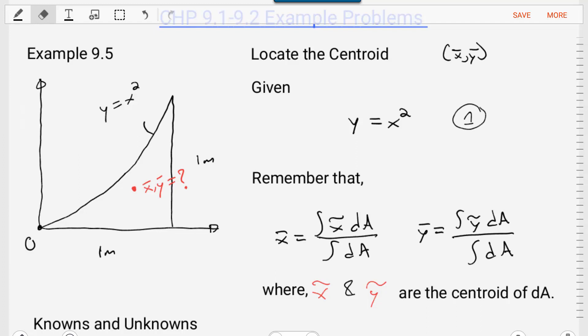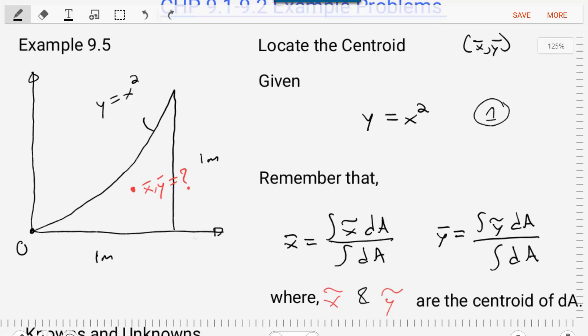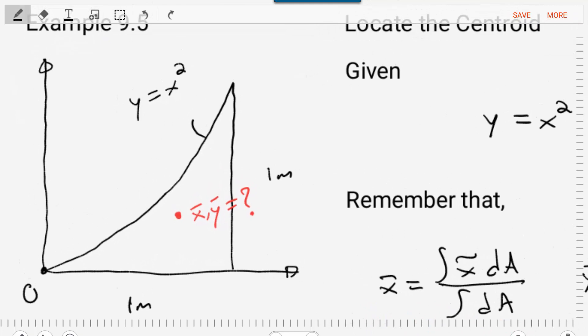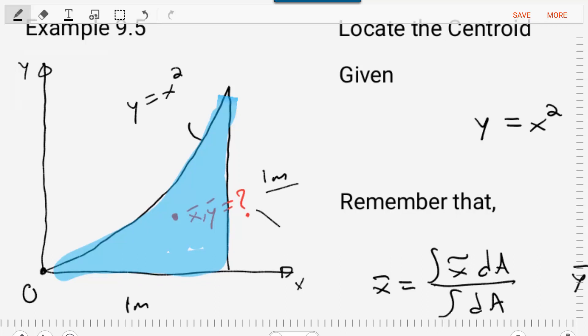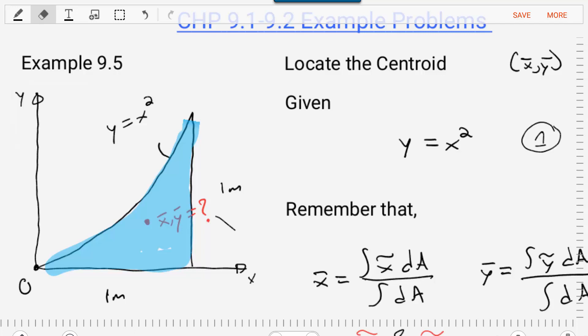In this problem, we are asked to find the centroid, meaning the X bar and Y bar, for the given area. Here we've got a coordinate system, X and Y. The area that we're given is this nonlinear area defined by the equation Y equals X squared. We're told that it's one meter high and one meter long.